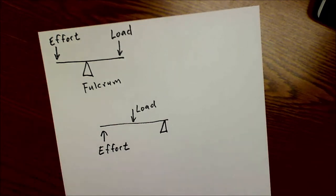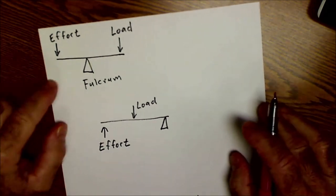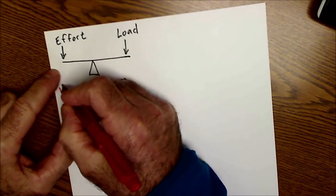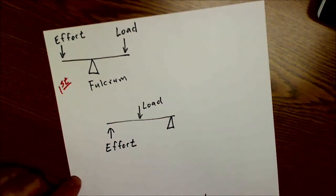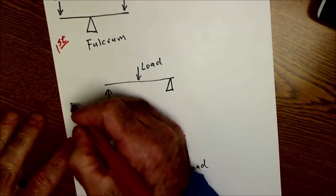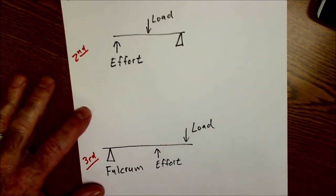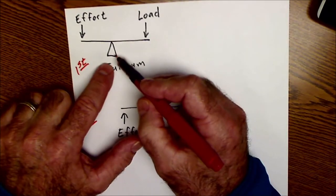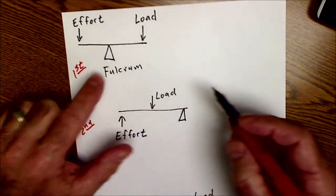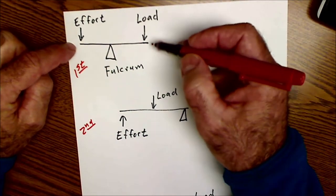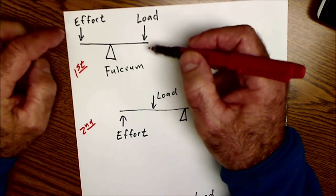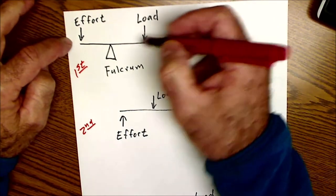A lever is a simple machine and there are three classes of levers. This is a first class lever here. This is a second class lever here and this is a third class lever down here. The fulcrum is a pivot point. So let's take a look at this first.